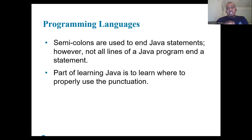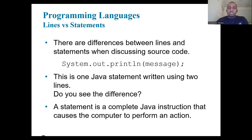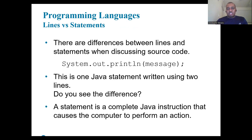An important part of learning Java is understanding its punctuation, particularly the use of semicolons. Semicolons are used to end a Java statement. However, not all lines of a Java program are a statement — for example, System.out.println(message) with a semicolon can be one Java statement written across two lines. A statement is a complete Java instruction that causes the computer to perform an action.